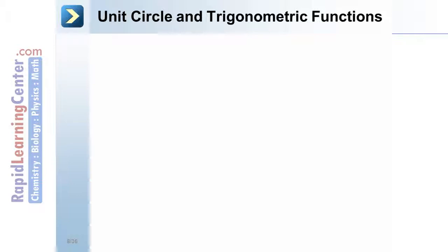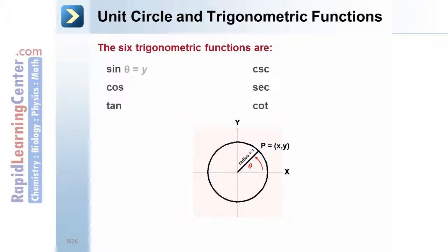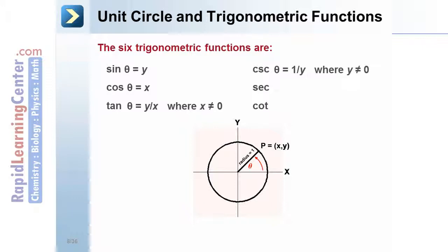The six trigonometric functions are sine, cosine, tangent, cosecant, secant, and cotangent. On the unit circle, sine of theta equals y, cosine of theta equals x, tangent of theta equals y over x, cosecant of theta equals 1 over y, secant of theta equals 1 over x, and cotangent of theta equals x over y.